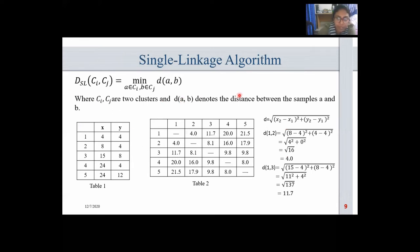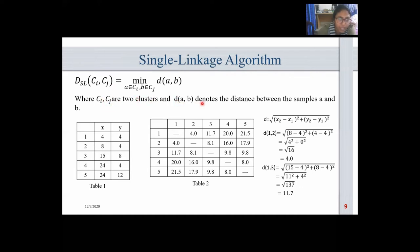The single linkage algorithm is the most common algorithm in hierarchical clustering. It is also known as the minimum method and the nearest neighbor method. It is obtained by defining the distance between two clusters to be the smallest distance between two points such that one point is in each cluster. If c_i and c_j are two clusters, the distance between them is defined by this equation, where d(a, b) denotes the distance between samples a and b.